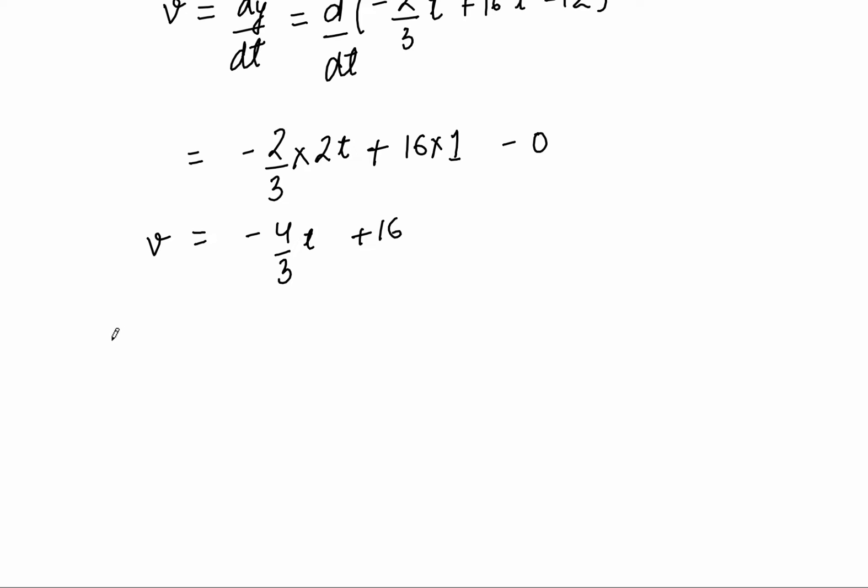So for an object at rest, I am writing velocity equals zero. So on the left-hand side, I will put 0 in this expression: it will be minus 4 upon 3 t plus 16.